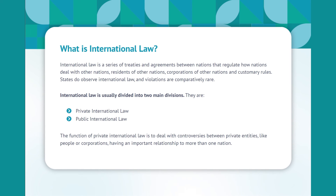They are: private international law and public international law. The function of private international law is to deal with controversies between private entities, like people or corporations, having an important relationship to more than one nation.